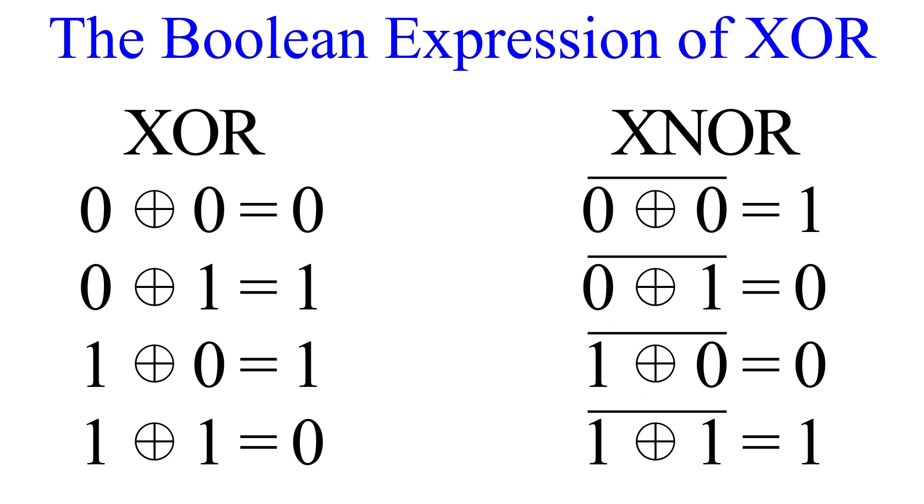So here are the four Boolean expressions for both the XOR and XNOR functions. 0 XOR 0 is 0, and 0 XNOR 0 is 1. 0 XOR 1 is 1, and 0 XNOR 1 is 0. 1 XOR 0 is 1, and 1 XNOR 0 is 0. Finally, 1 XOR 1 is 0, and 1 XNOR 1 is 1.